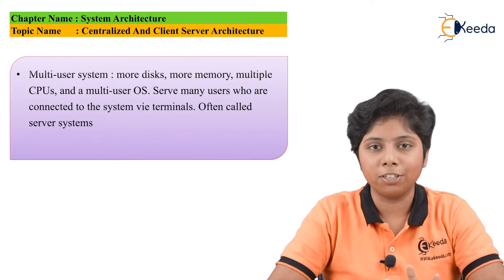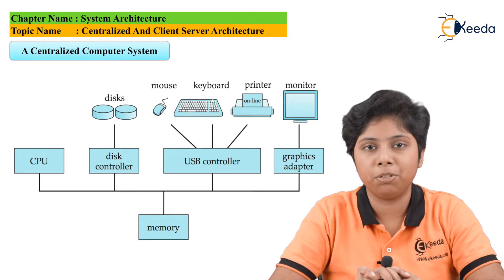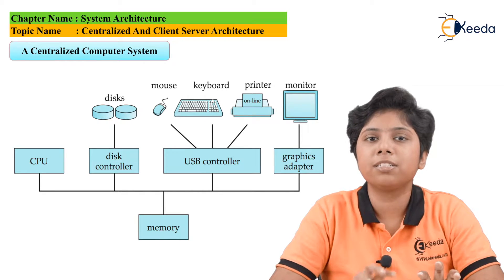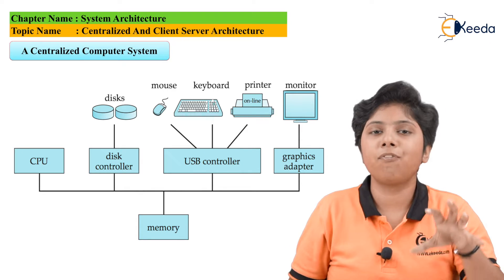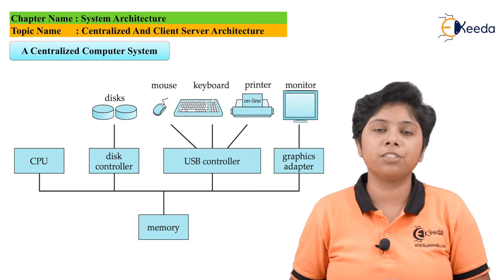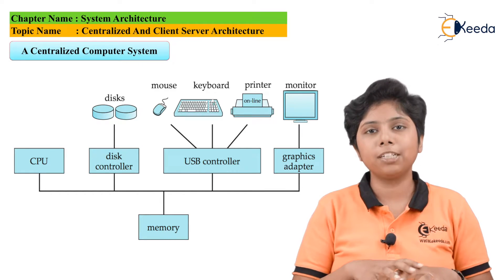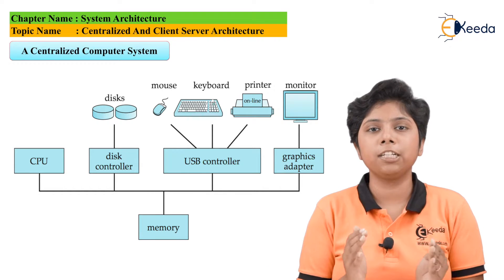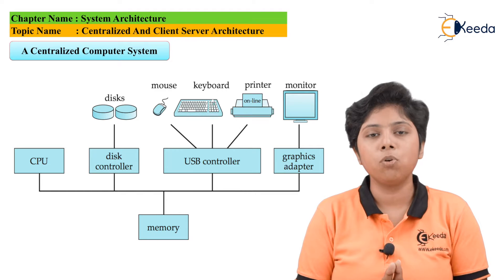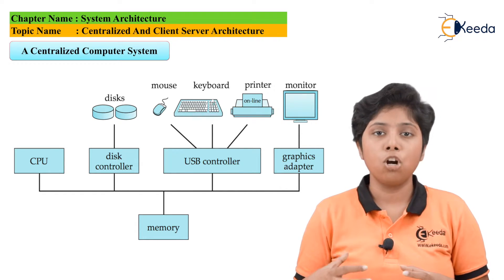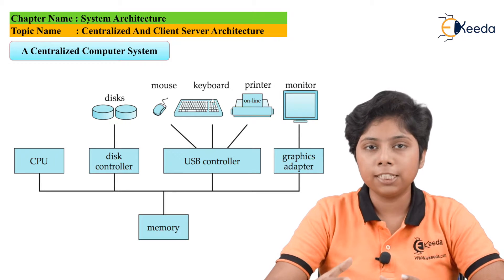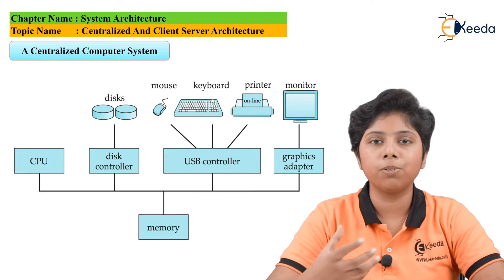In a centralized system, the processor is the core or backbone of the computer and is attached to many device controllers. Each device controller is in charge of a specific type of device — for example, the I/O device controller handles the keyboard and mouse, and the USB device controller handles flash drives. All controllers are connected to a common bus through which they communicate with the centralized computer system. The CPU takes cycles on each device controller, which uses device registers to indicate the next device to connect to the CPU.